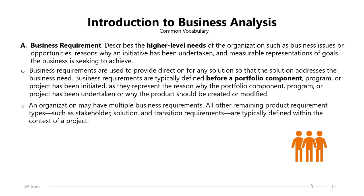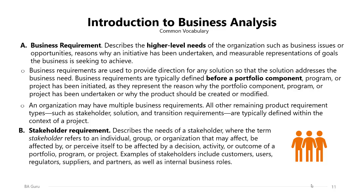The second product requirement type is the stakeholder requirement, which describes the needs of a stakeholder, where the term stakeholder refers to an individual, group, or organization that may affect, be affected by, or perceive itself to be affected by a decision, activity, or outcome of a portfolio, program, or project. Examples of stakeholders include customers, users, regulators, suppliers, and partners, as well as internal business roles of the organization. The requirements of these people fall under the stakeholder requirements category.